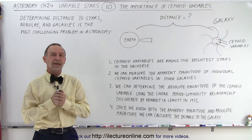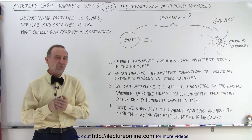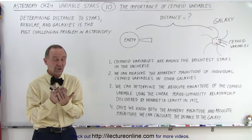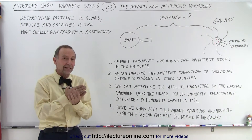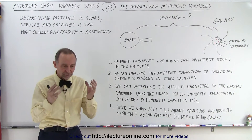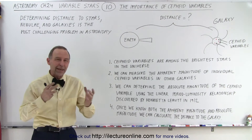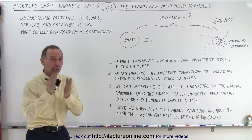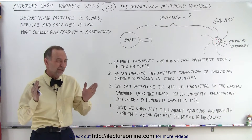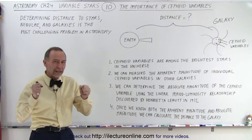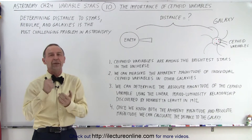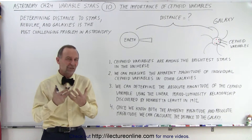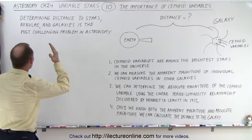Welcome to ElectronLine. So why are Cepheid variables so important? When Henrietta Leavitt discovered the linear relationship between the period and luminosity of Cepheid variables, that was such a breakthrough because the most challenging problem in astronomy is finding the distance. Let's take a look at this statement.